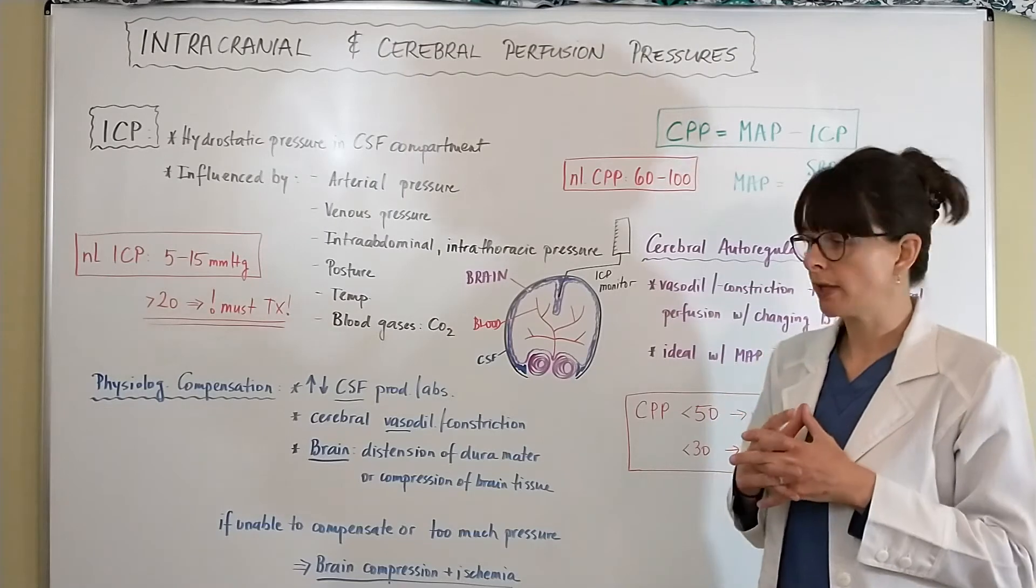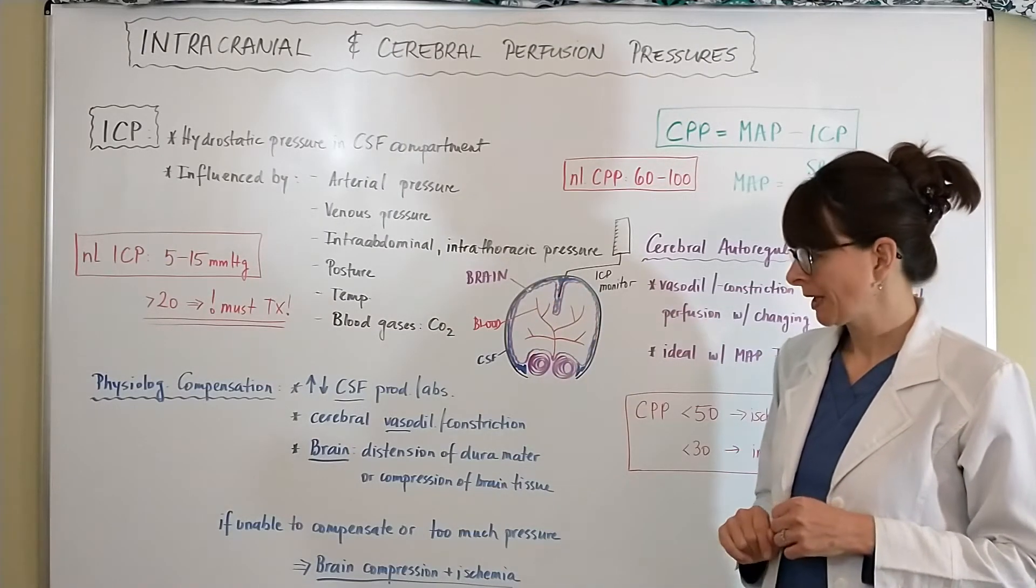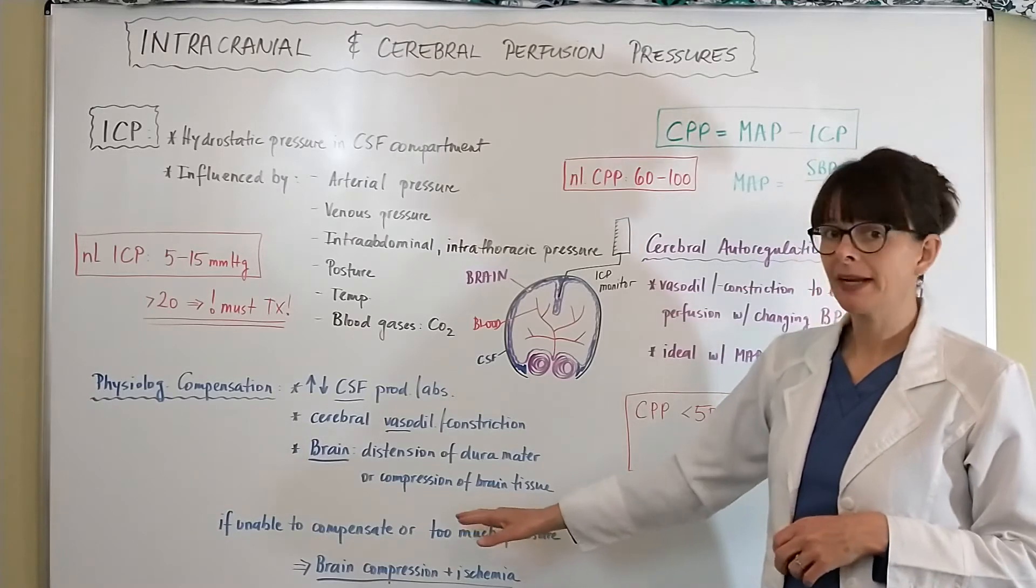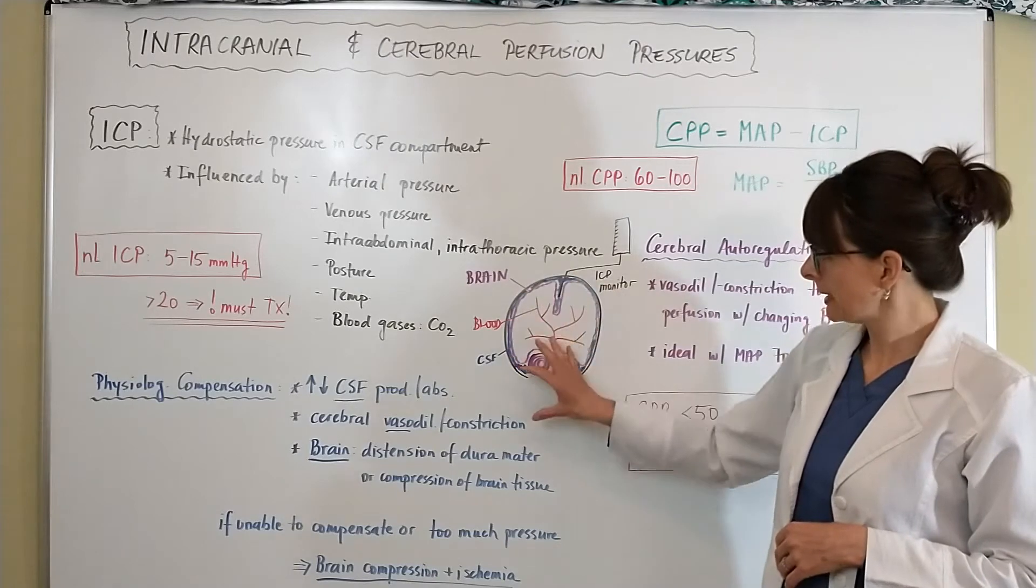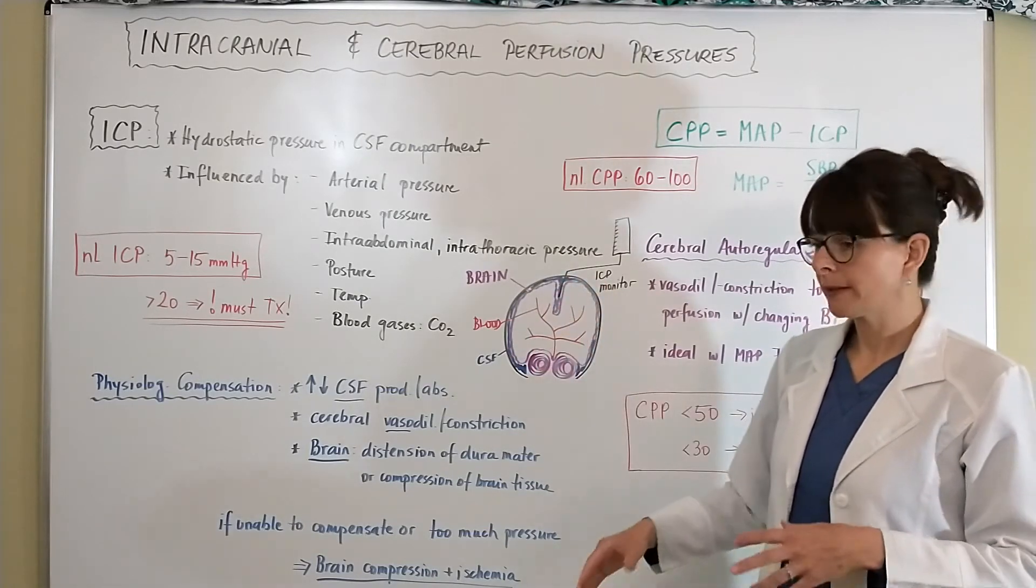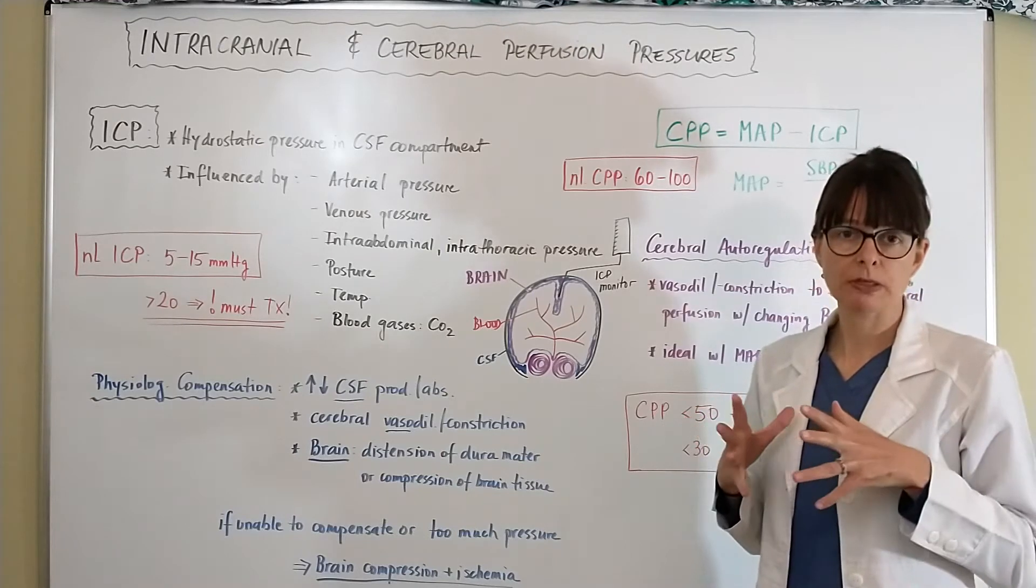But if the body is unable to compensate or there is too much pressure in that intracranial cavity, then the brain gets compressed and ischemia occurs because now we have no blood flow, and then eventually cell death will occur.